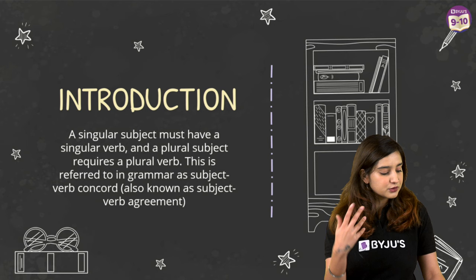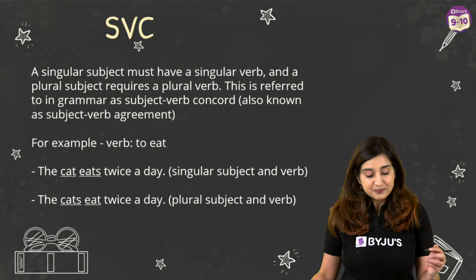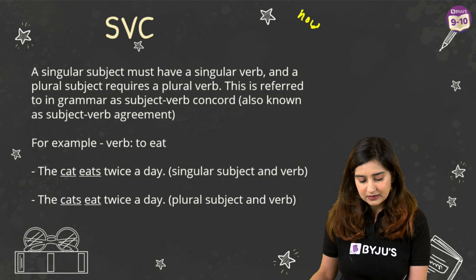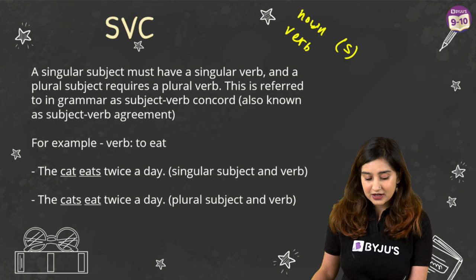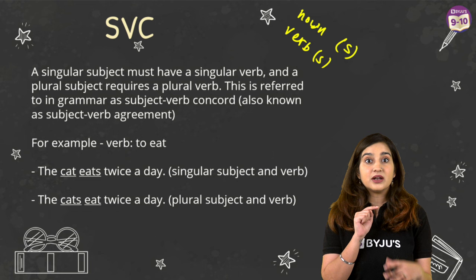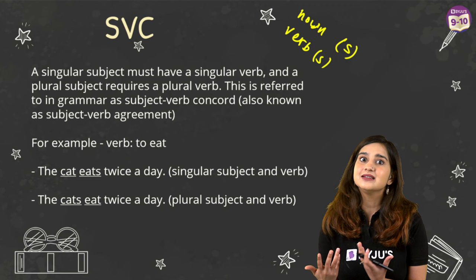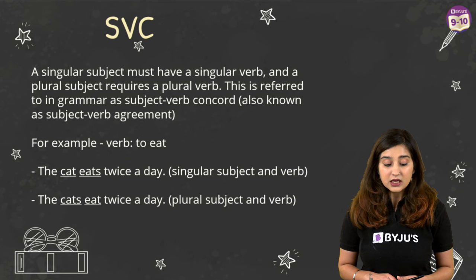In the regular case, one thing we need to always remember is: when a noun takes an S it becomes plural, but when a verb takes an S it becomes singular. So a noun with S is plural, but a verb with S is singular. Just remember this — it's a silly mistake you shouldn't make. Singular subject takes a singular verb; plural subject takes a plural verb.